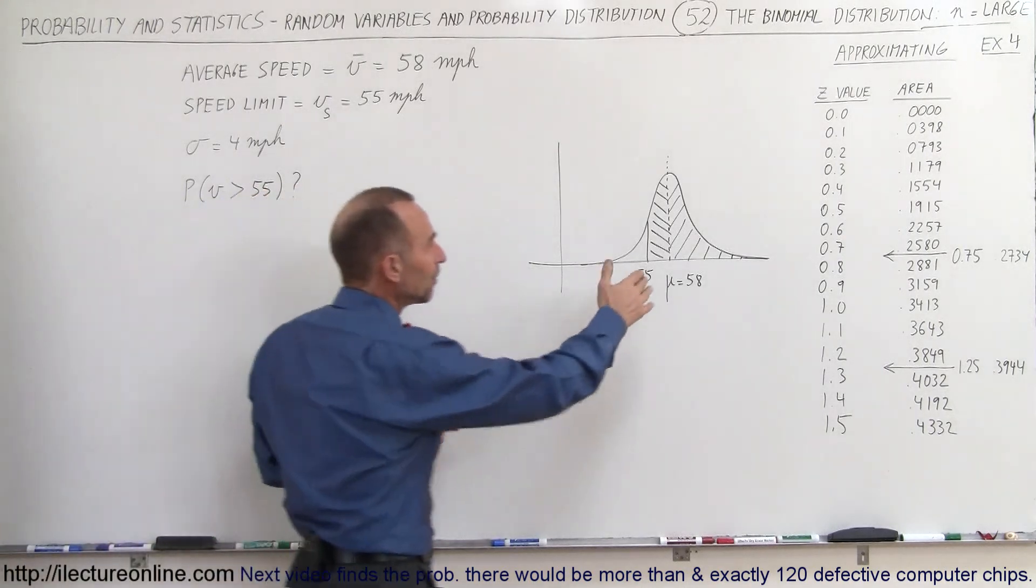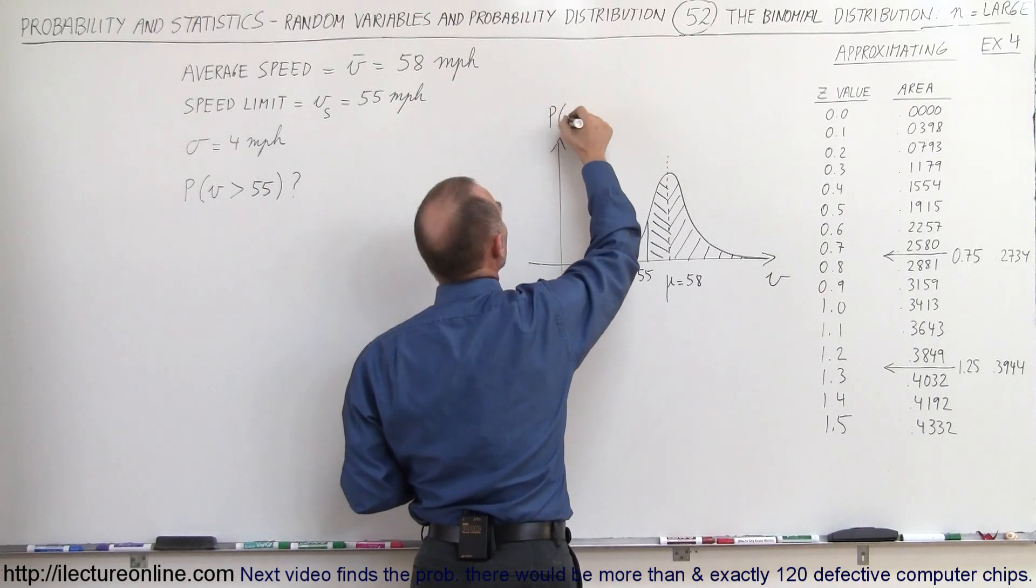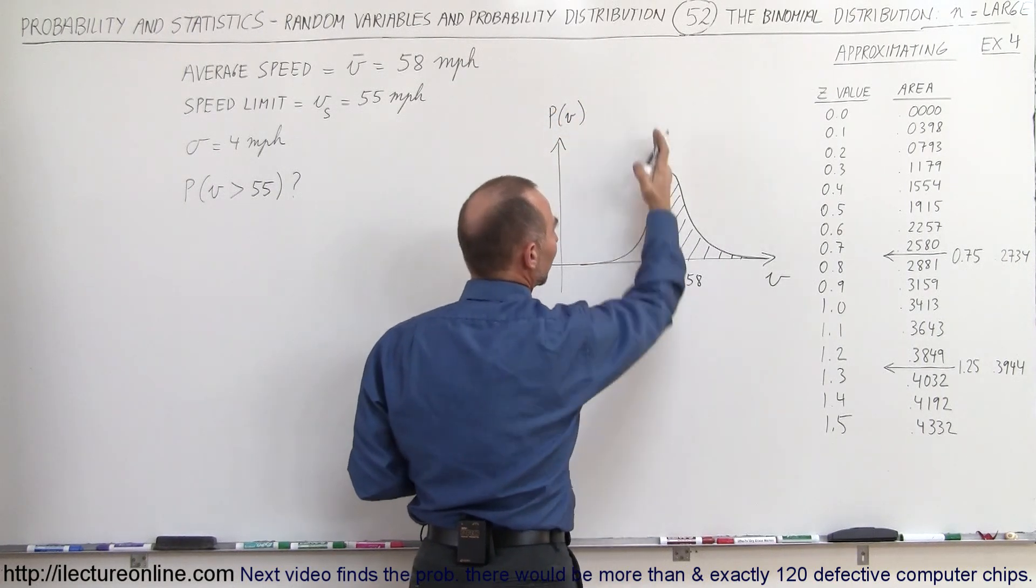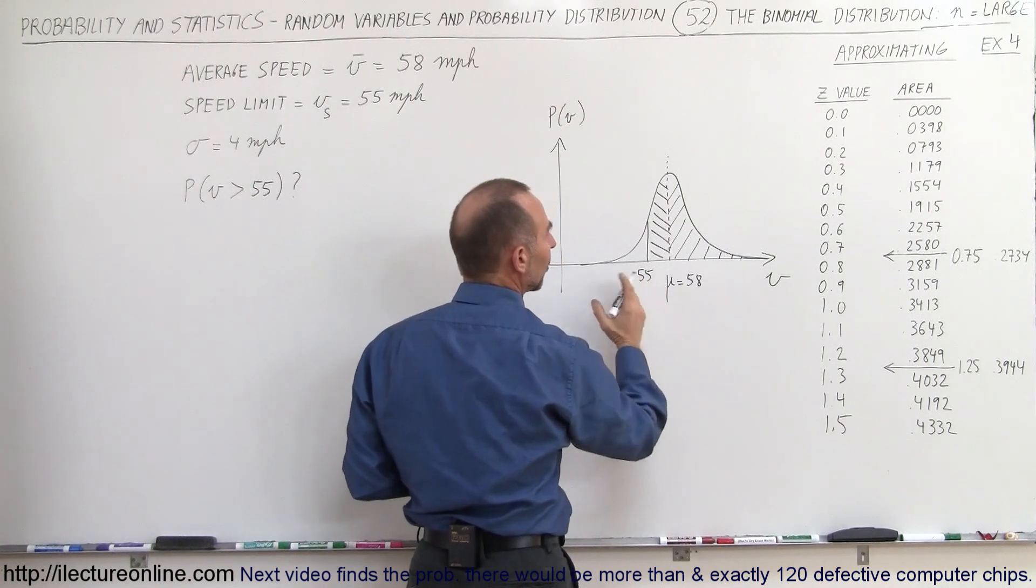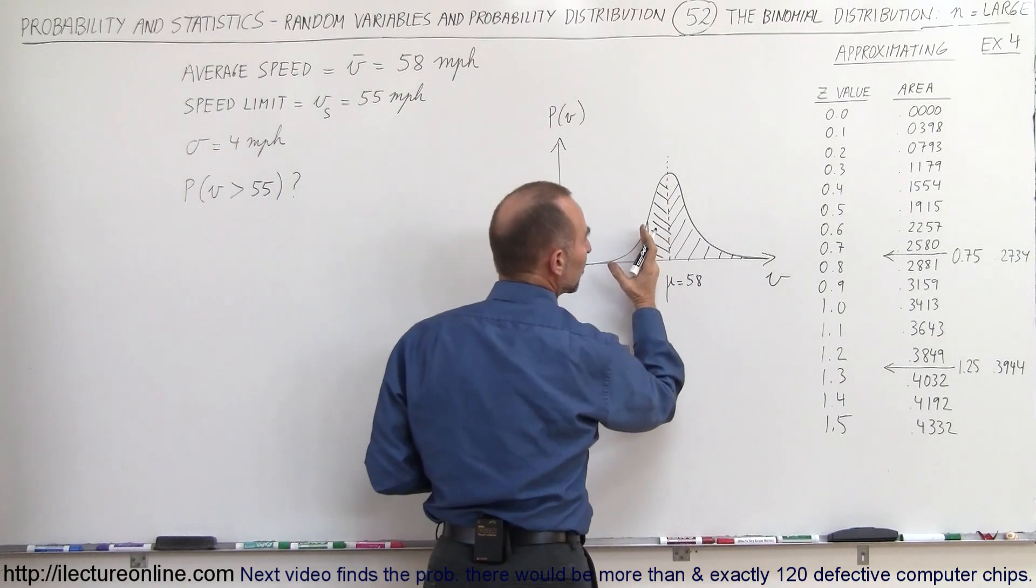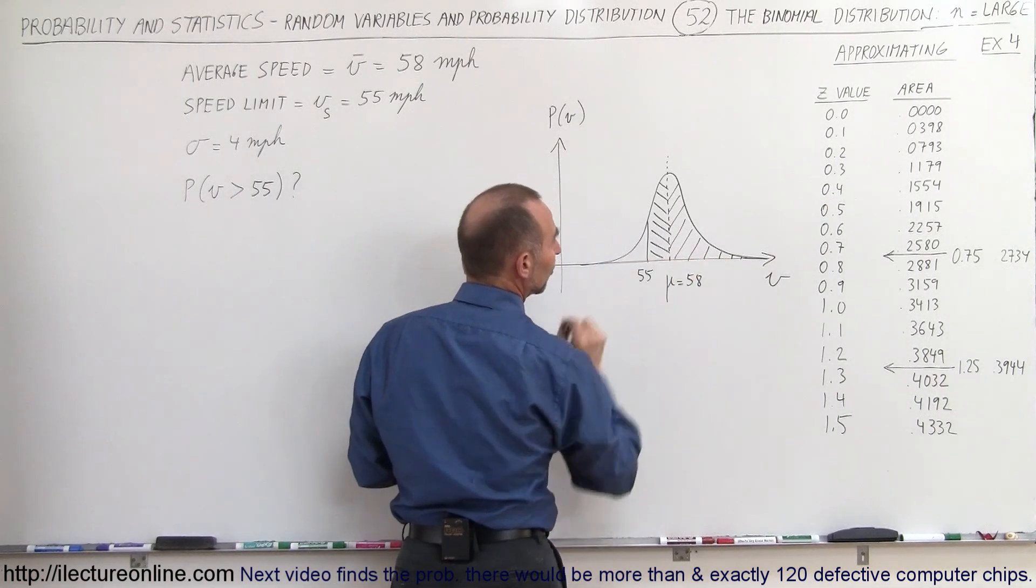Graphing this out, we can see that this would be V. This would be the probability of V. You can see that the average or expected value is 58, and we're looking for all possibilities for the probability that cars will be driving faster than 55 miles per hour, which means we're going to be adding this area to this area.